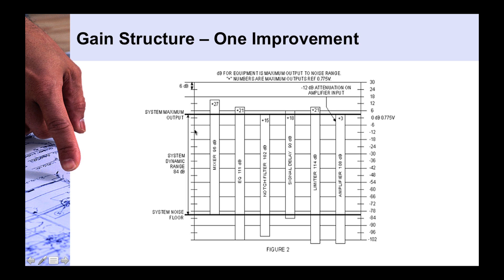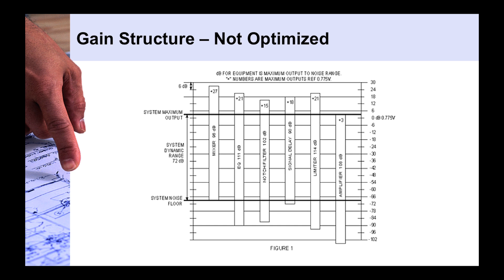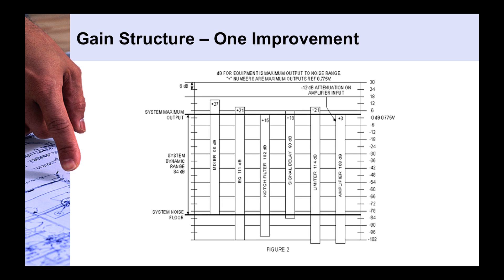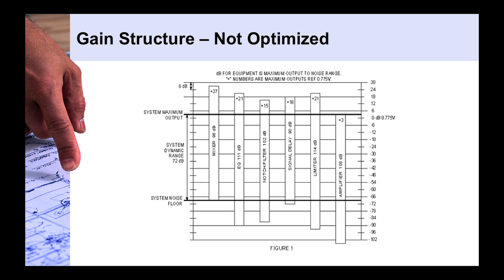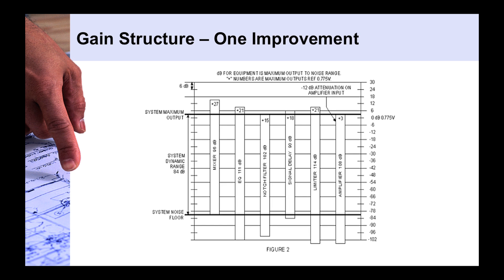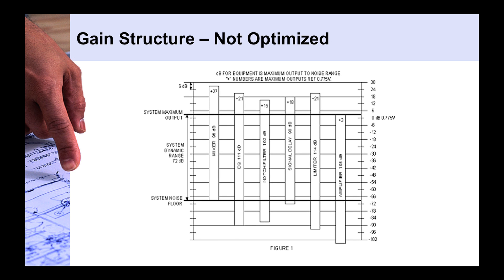So now, by making that one adjustment on the input of the amplifier, by kind of shifting this amplifier's input capability up, sliding this whole bar up a little bit, our dynamic range of the entire system has been increased to 84 dB. So let's go back and take a look real quick and just kind of go in A and B. This is before and after the adjustment. Before the adjustment, after the adjustment. So you can see how it's kind of virtually sliding that amplifier up into the same range of being able to handle the same kind of level of signals as the devices before it.